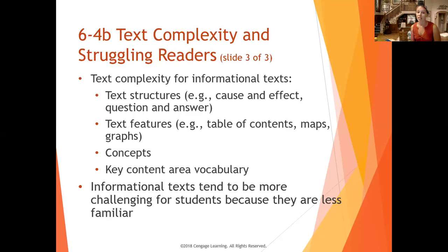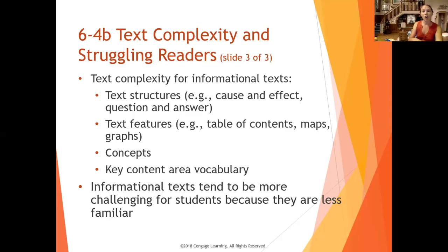With text complexity in informational text, the same things can happen — using those graphic organizers to look at different features and really understanding what we are learning. Sometimes you can use mentor texts as well, which is like a second text that pairs with the primary one to get more information. In that video where children were learning about weather, they had lots of different books to choose from — a primary source plus other books that still supported that topic.